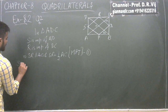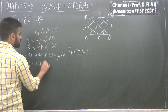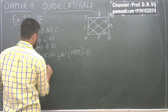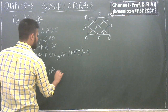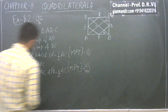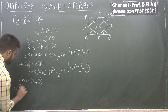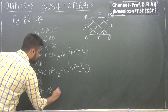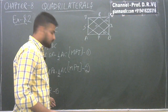Similarly, in triangle ABC, we will get that PQ is parallel to AC and PQ is equal to half of AC, by the midpoint theorem (MPT). We will take this as statement 2. From statements 1 and 2, we can say that PQ is parallel to SR and PQ is equal to SR. We will take this as statement 3.